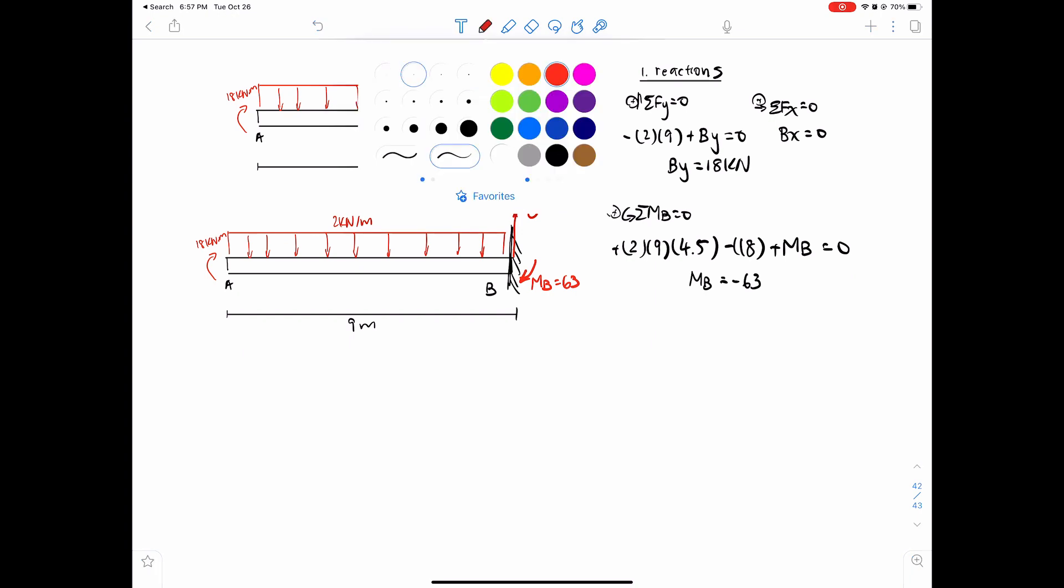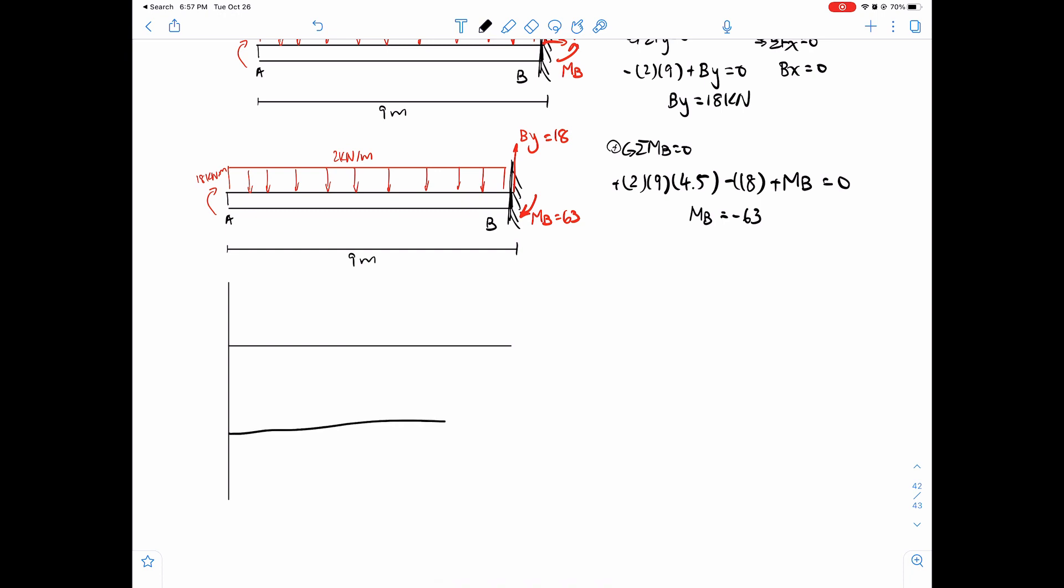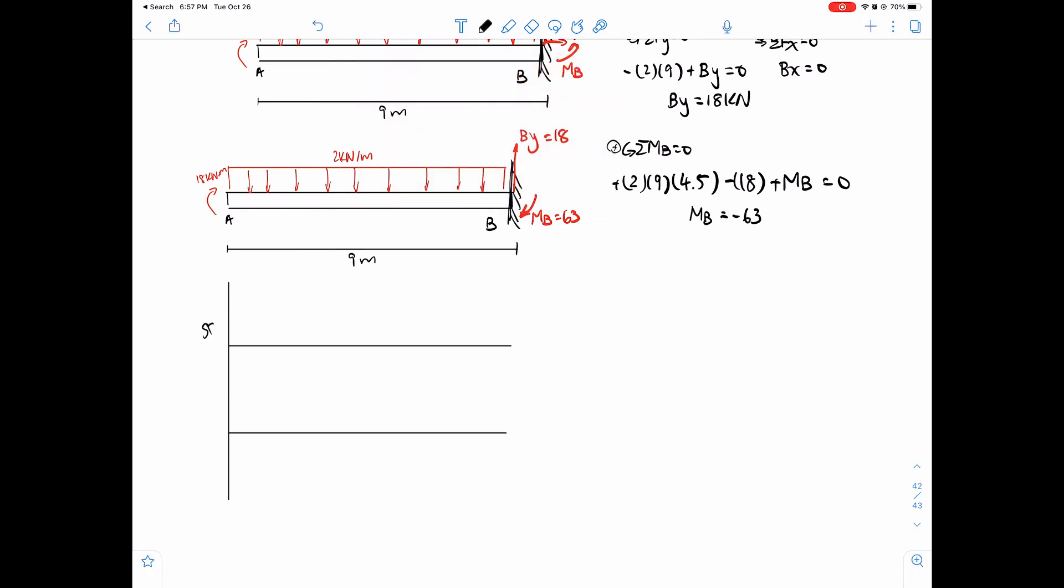So shear force and bending moment diagrams. How do we draw them? We can do it one of two ways, but I will show you the graphical method. And if you guys are up to it, I can definitely go over from the beginning how to really use the equations to kind of look at these. It's not too bad, but this way is much faster. So let's just go over this. Shear force diagram in kilonewtons and then bending moment diagrams also in kilonewtons. I mean, not also in kilonewtons, kilonewton-meters.